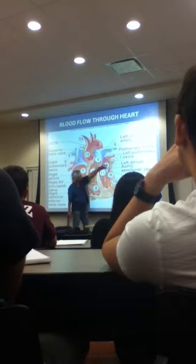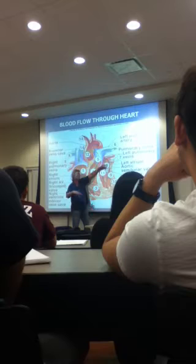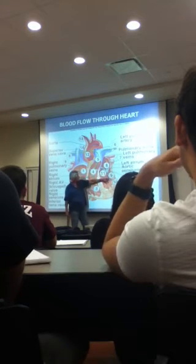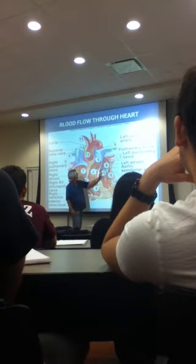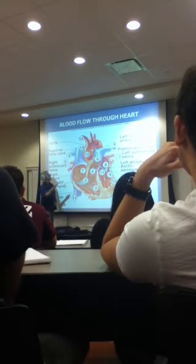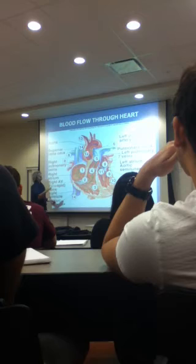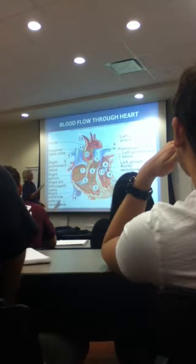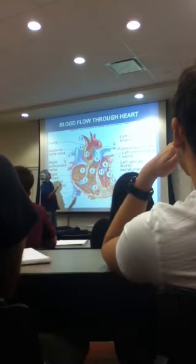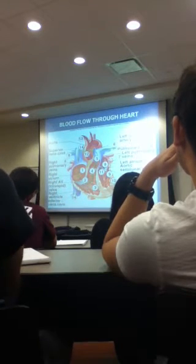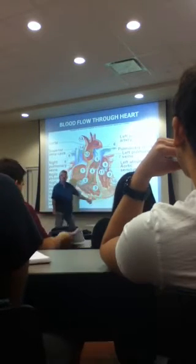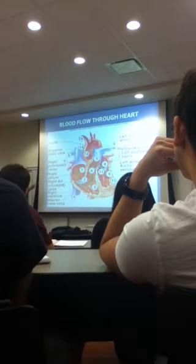What's next? You can say bicuspid, you can say mitral, you can say left AV valve. What's next? Left ventricle. What's next? Aortic semilunar valve pops open, and you end up in the aorta, and then you go wherever you want to go. It says to the right side of the brain, you go brachiocephalic. It says to the left side of the brain, you go left common carotid. It says to the left shoulder, you go left subclavian. You can do that over and over again. It never changes.